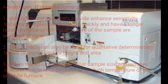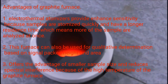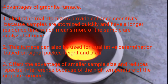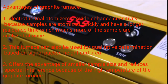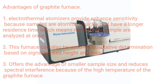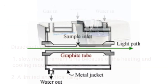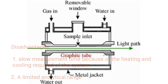A graphite furnace is generally considered an ultra-trace and micro-trace analytical technique with limits of detection in the low picogram range, precision of a few percent, and a dynamic range of about three orders of magnitude. Advantages: 1. Provides enhanced sensitivity because samples are atomized quickly and have a longer residence time, meaning more of the sample is analyzed at once. 2. Can be used for qualitative determination based on signal peak height. 3. Offers the advantage of smaller sample size and reduces spectral interference. Disadvantages: 1. Slow measurement time due to heating and cooling required. 2. Limited analytical range.